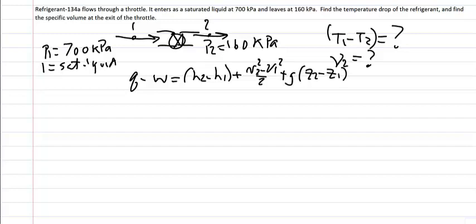Now throttles are rather small devices. The amount of heat transfer is generally negligible. Perhaps this problem could have been written stating that it's an adiabatic throttle or a well-insulated throttle, but we're going to assume that the heat transfer is zero as typical of a throttle. Also, there's no work of any kind associated with this device, so the work term is zero.